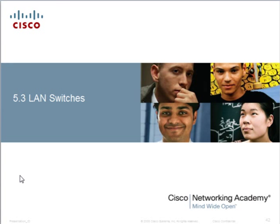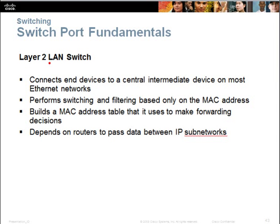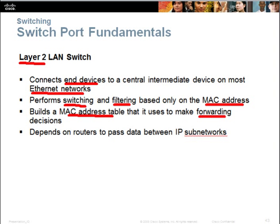Now let's look at LAN switches. A LAN switch resides at layer 2 of the OSI model. It connects end devices to central intermediate devices for most Ethernet networks and performs switching and filtering using MAC addresses. Using the MAC address table, it is able to make packet forwarding decisions. IPv4 packets are handled by routers.